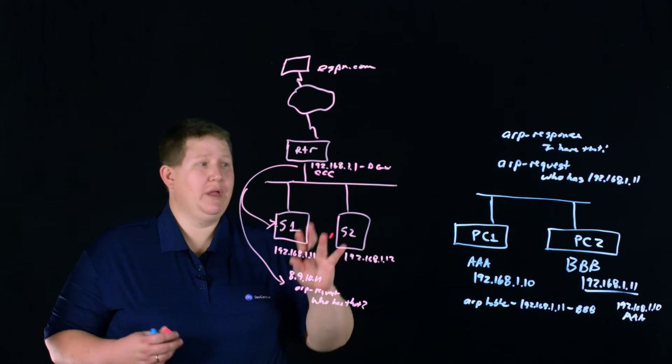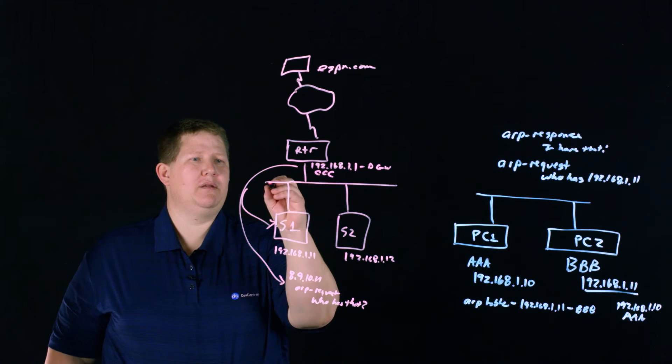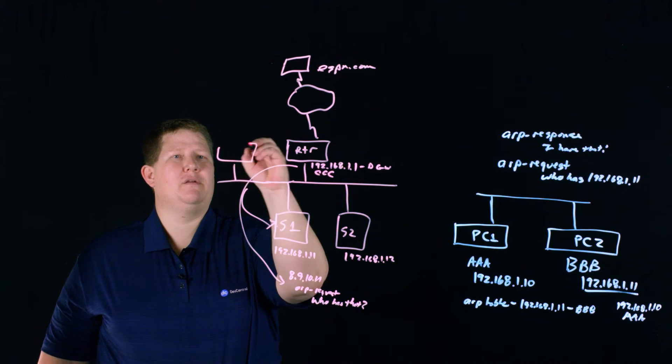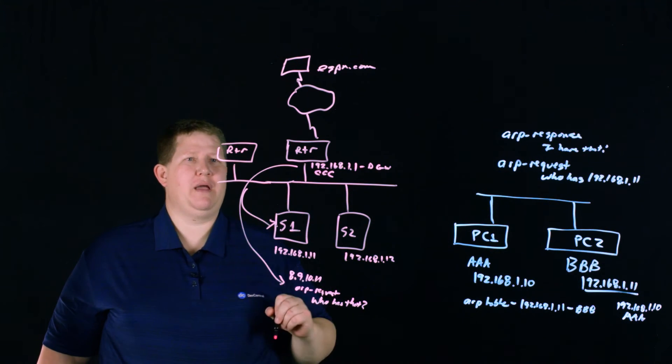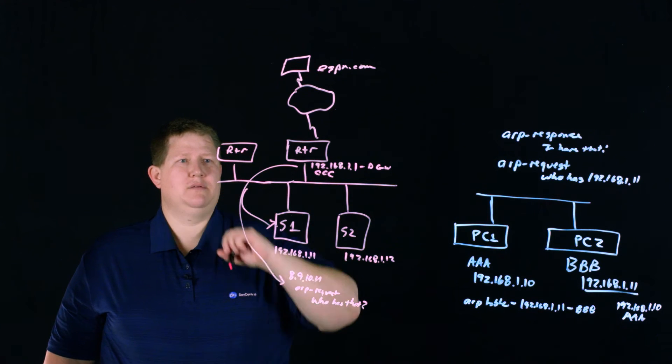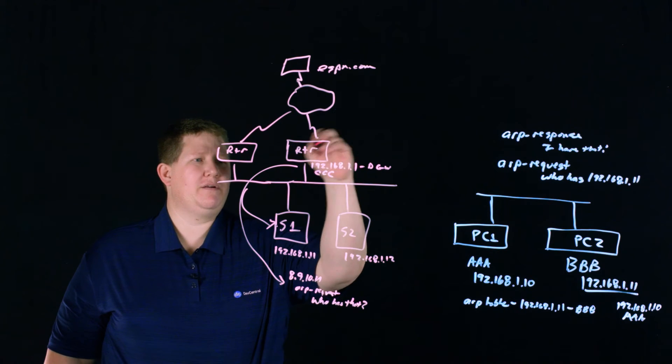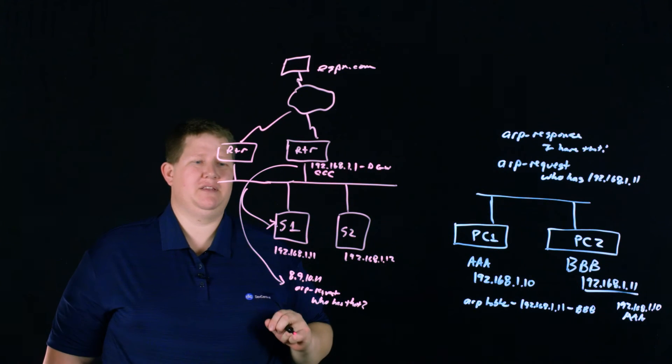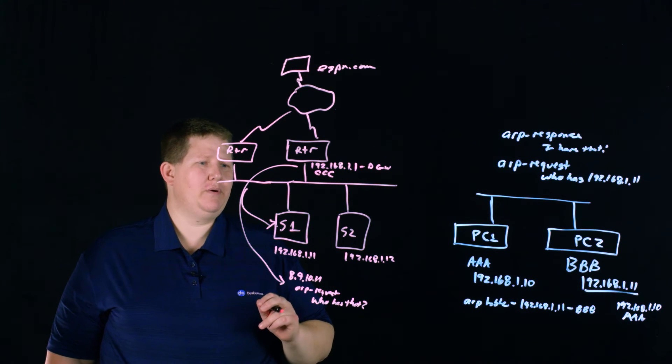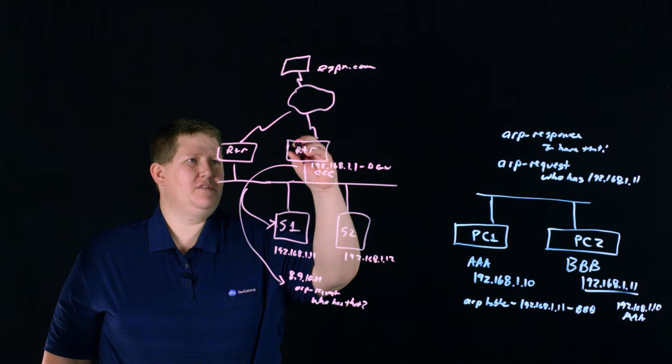So, you know, it works the same way as over here. No big deal. But then what happens if I add another router? Because I want redundancy for my gateways so that just in case this router fails, I can still get out to the Internet.